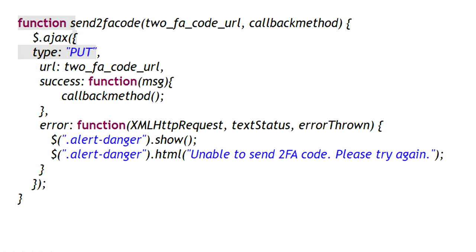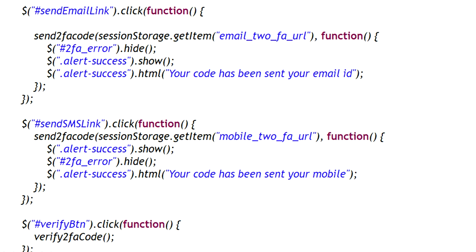This is the method to send the 2FA code. It makes an AJAX request passing the 2FA code URL. After sending, if I get a 200 OK response I call the callback method. If any error occurs while sending the 2FA code, I show an error on the login screen like 'Unable to send the 2FA code, please try again.' If the user chooses the resend option by email, I call the same send 2FA code method but get the email 2FA URL from session storage. If the user clicks the resend by SMS link, I call the same method but use the mobile 2FA URL.